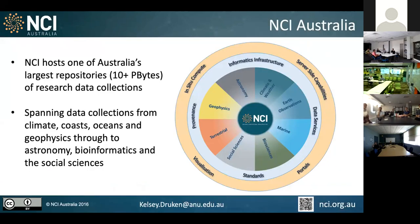A little bit of background about NCI for those who aren't as familiar: we're a national computational infrastructure here in Australia. A big part of our focus is traditional HPC usage, but we're also a data repository — at the time of these slides, 10 plus petabytes, and that's even bigger now. We span a very wide range of domains in terms of the data we host: climate, coast, oceans, geophysics, astronomy, bioinformatics, et cetera. The approaches and best practices we share really have to be broad enough to cover this full domain.